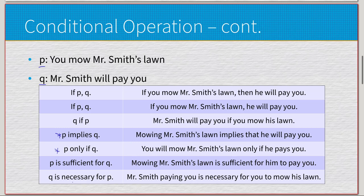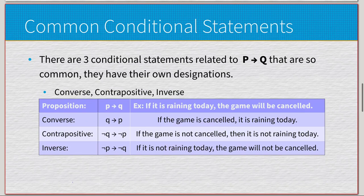Now there are three specific types of transformations of a conditional statement. They are very commonly used in proofs that we'll get to in chapter 2. We have converse, we have contrapositive, and we have inverse. These are all operations of the conditional statement, but at the end of the day they all mean the same thing.